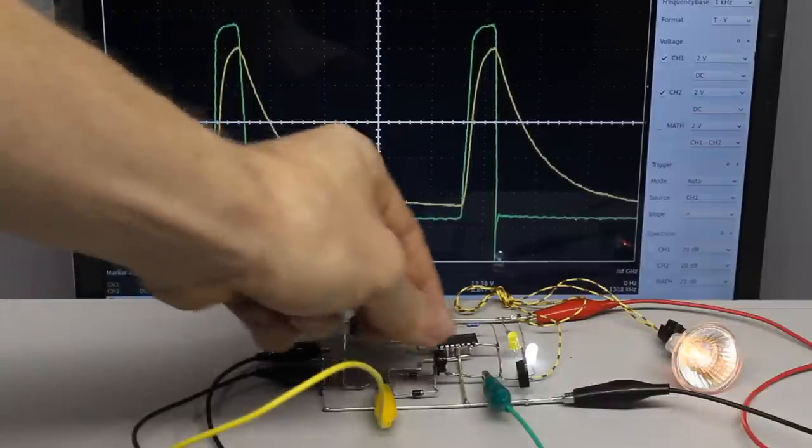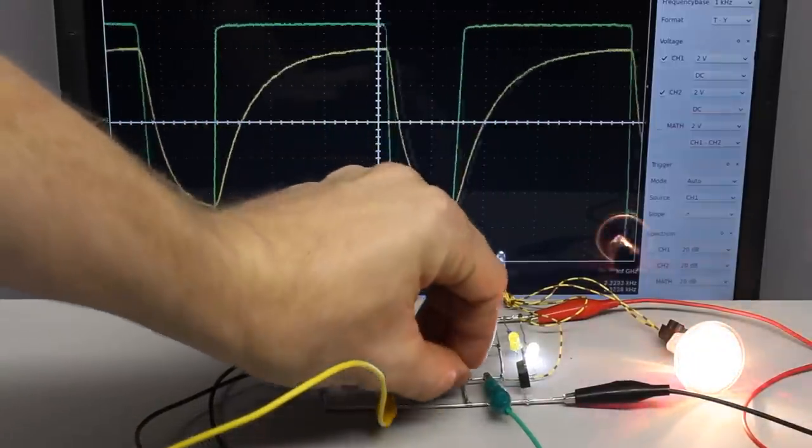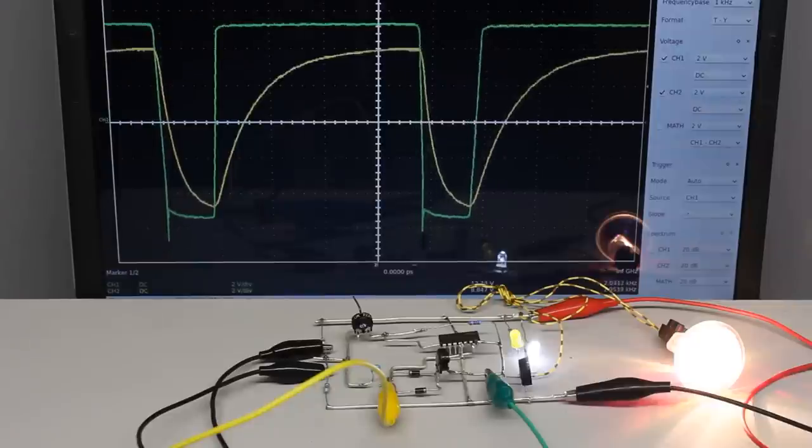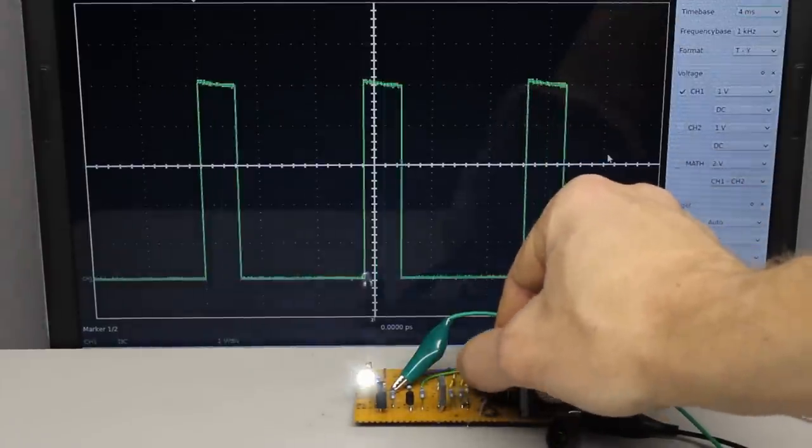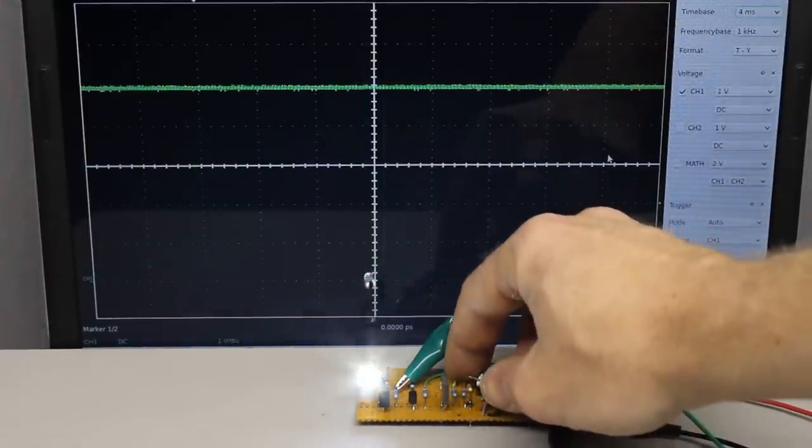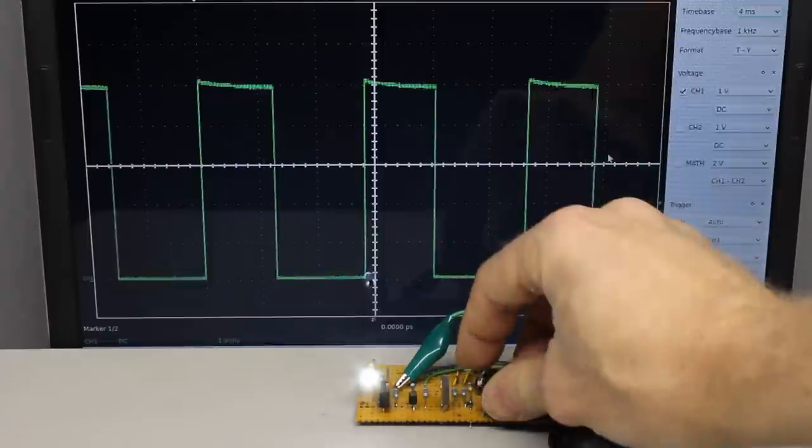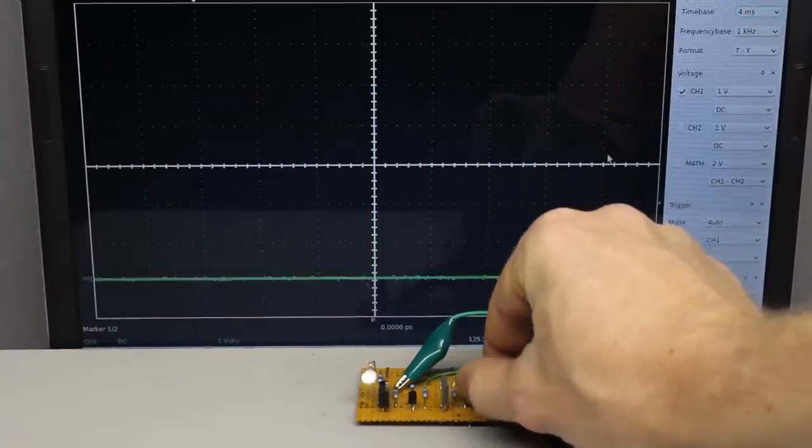Besides electric motors, illuminants like LEDs or filament lamps can also be dimmed by pulse width modulation. Whenever a high quality of the output signal at a wide frequency range is required, digital circuits are a good choice.